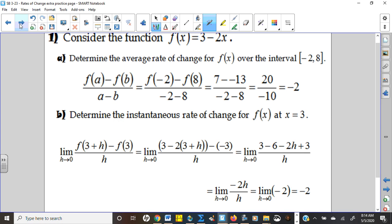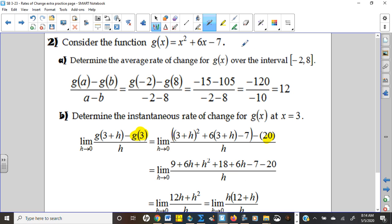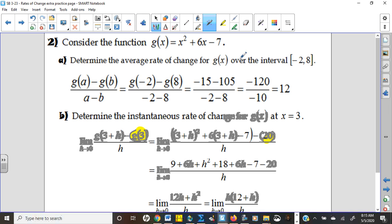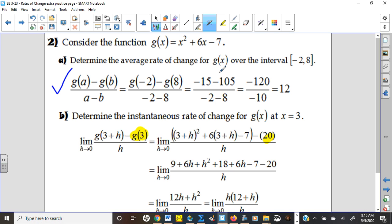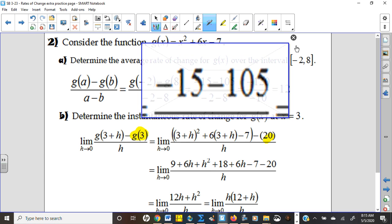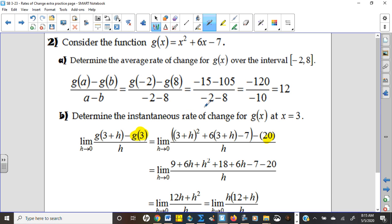Just y minus y over x minus x for average rate of change. Number two got a little more exciting because it was a parabola, an x squared, but the first part was still just asking for the average rate of change. So y minus y over x minus x is your formula. Plug negative 2 into the function, plug 8 into the function. These are the y values you would have gotten if you did that. You should be showing that work, but if I plug negative 2 in, I get negative 15. If I plug 8 in, I should get 105. It looks like it turns out to be 12.